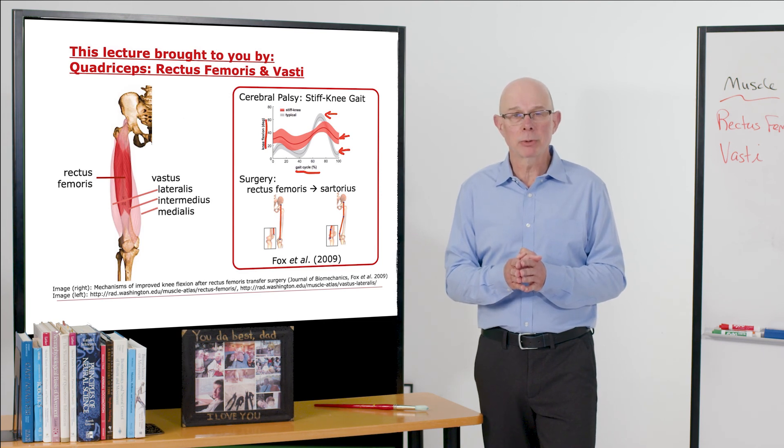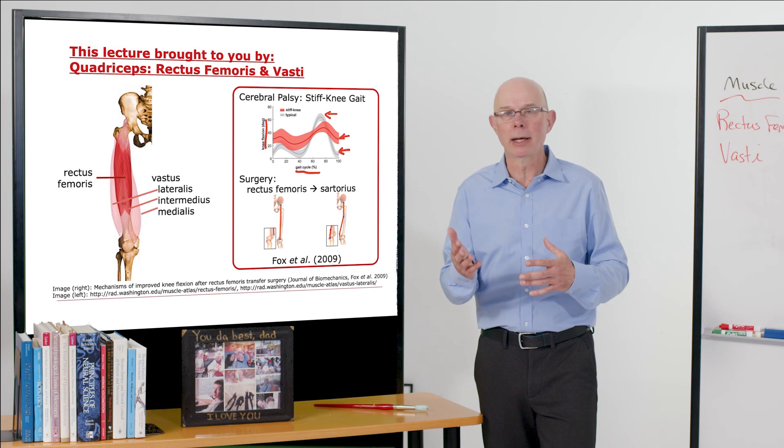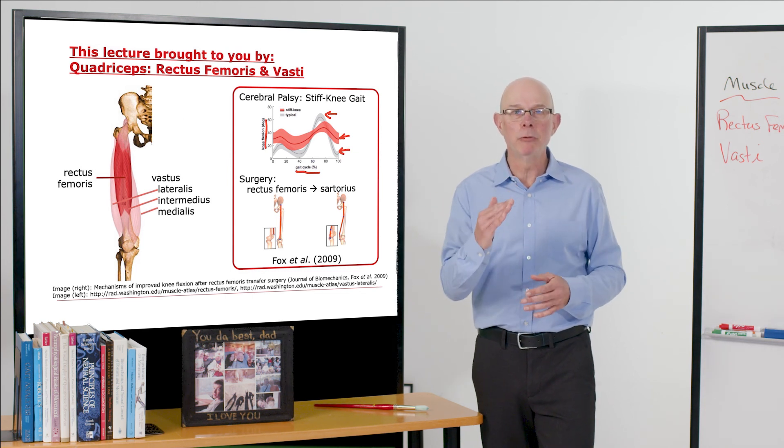So that's the quadriceps. Rectus femoris plus the vastae equal the four heads of the quadriceps. Let's move on.